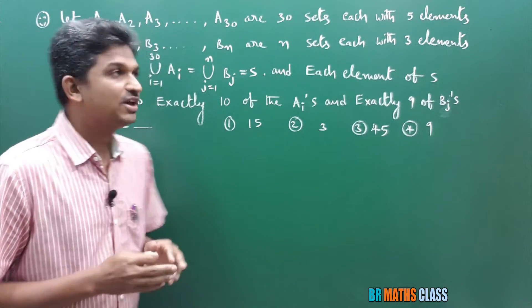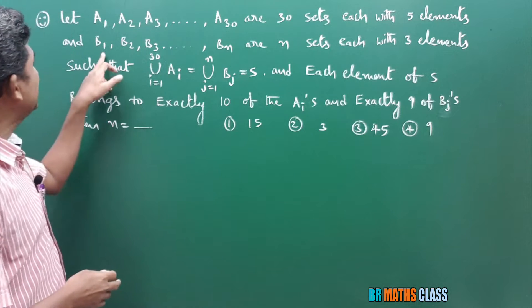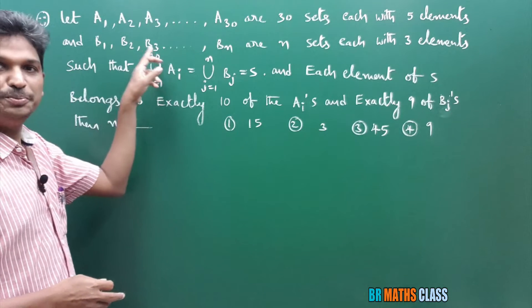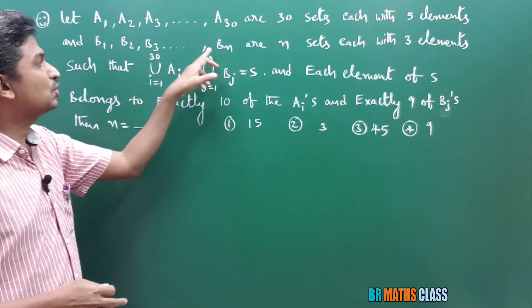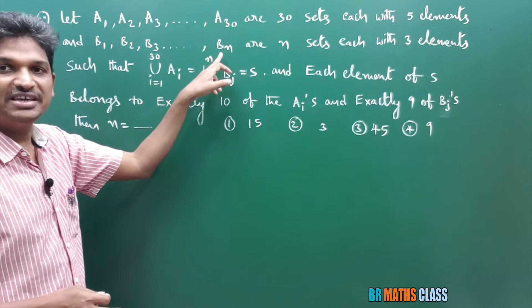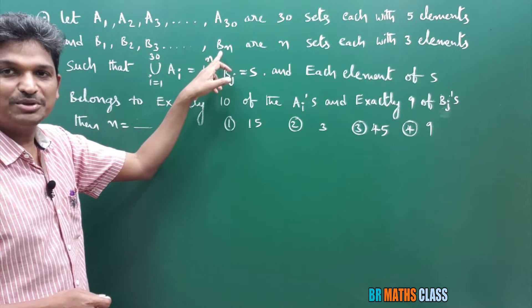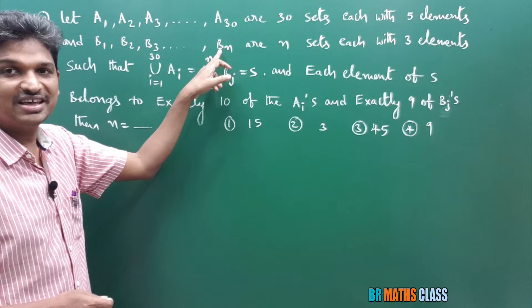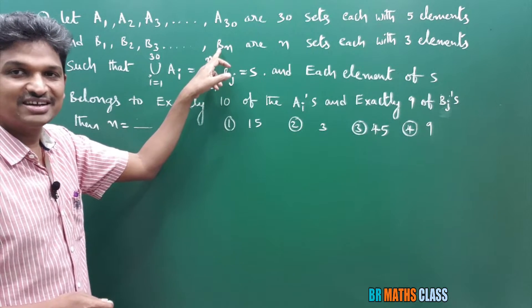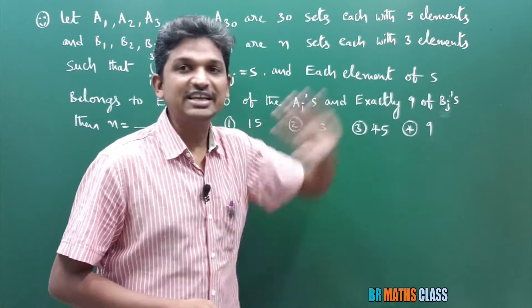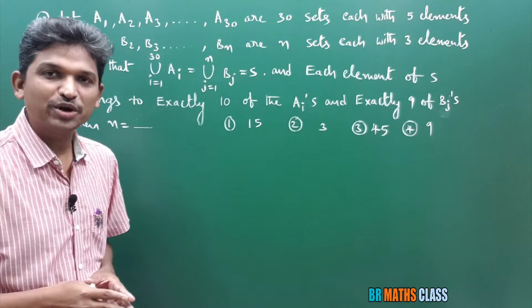In the same way, B1, B2, B3, and so on up to Bn. That means how many sets are there? N sets are there, each with 3 elements.